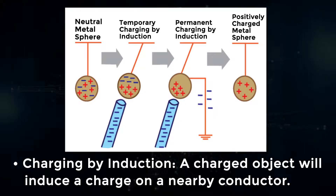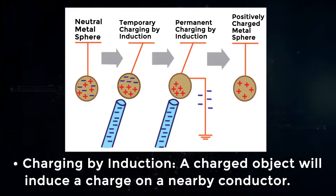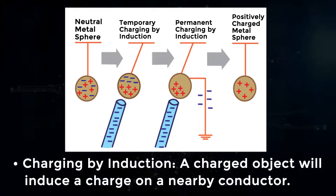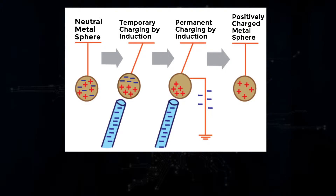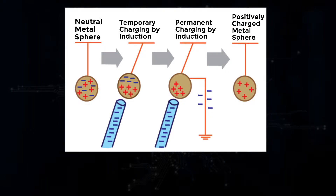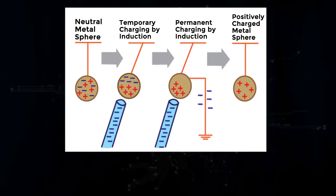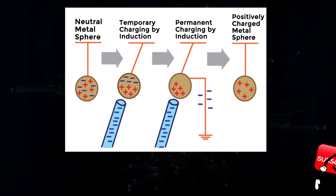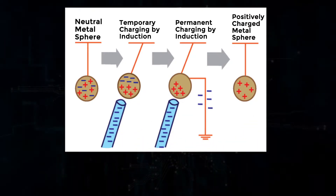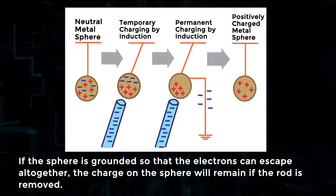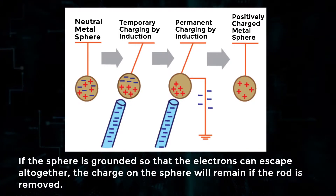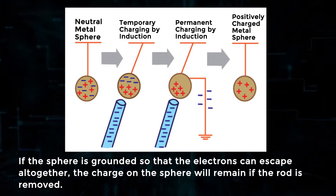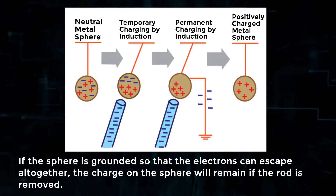Charging by induction. A charged object will induce a charge on a nearby conductor. In this example, a negatively charged rod pushes some of the negatively charged electrons to the far side of a nearby copper sphere, because like charges repel each other. The positive charges that remain on the near side of the sphere are attracted to the rod. If the sphere is grounded so that the electrons can escape altogether, the charge on the sphere will remain if the rod is removed.